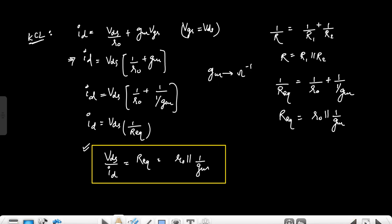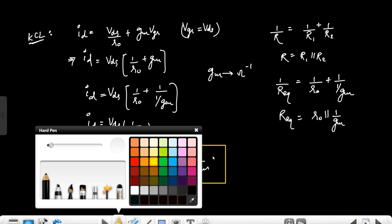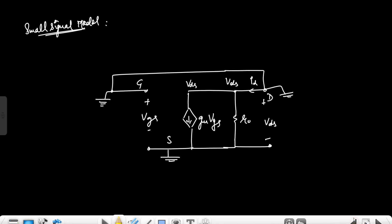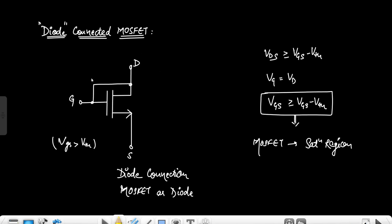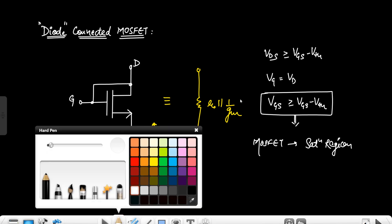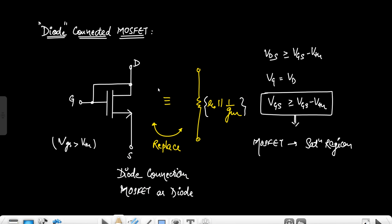So the resistance offered by the diode-connected MOSFET is r0 in parallel with 1/gm, which is approximately 1/gm. Whenever the gate and drain of a MOSFET are short circuited, it is equivalent to a resistor with value r0 parallel with 1/gm. This is the concept of the diode-connected MOSFET and how it acts as a resistor when gate and drain are short circuited. Thank you.